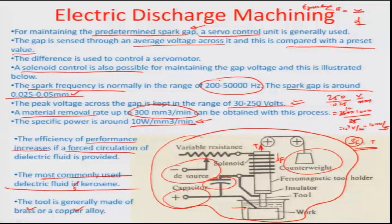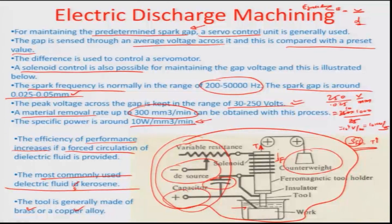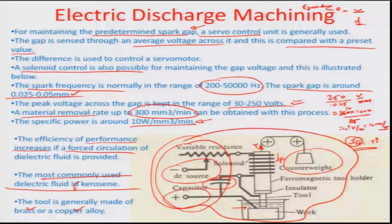If the solenoid force (which depends on the difference between preset and gap voltage) decreases, then the tension becomes more dominant and the tool moves backwards. Similarly, if the solenoid force exceeds the tension, the tool feeds forward into the workpiece. That is how such a tool can be operated.